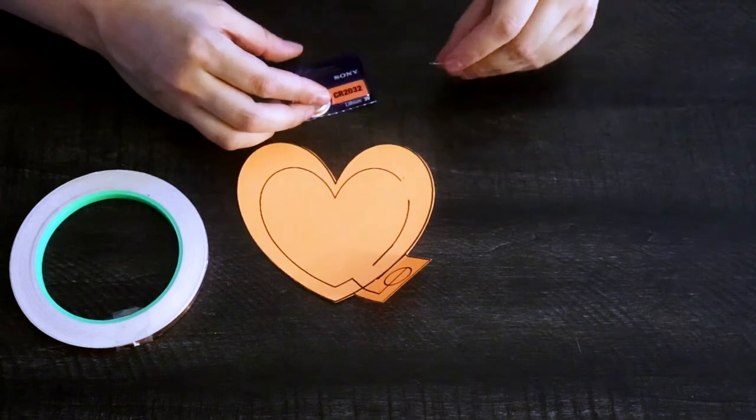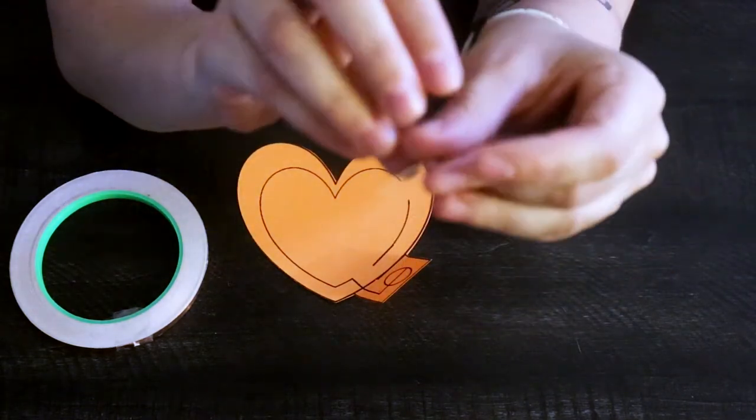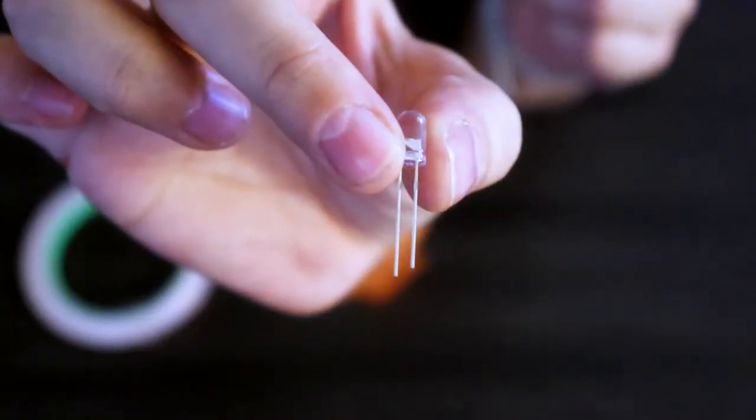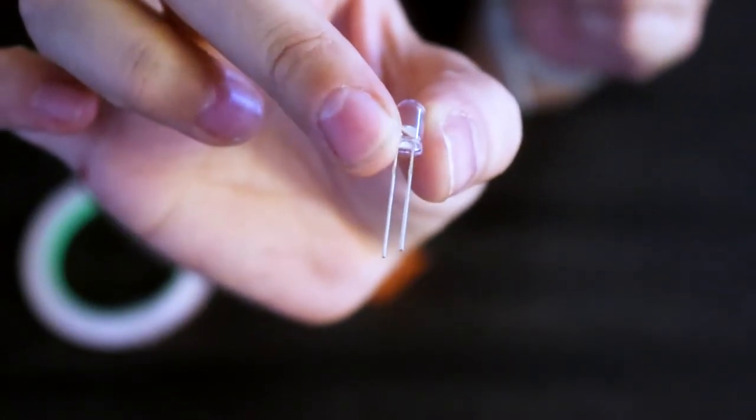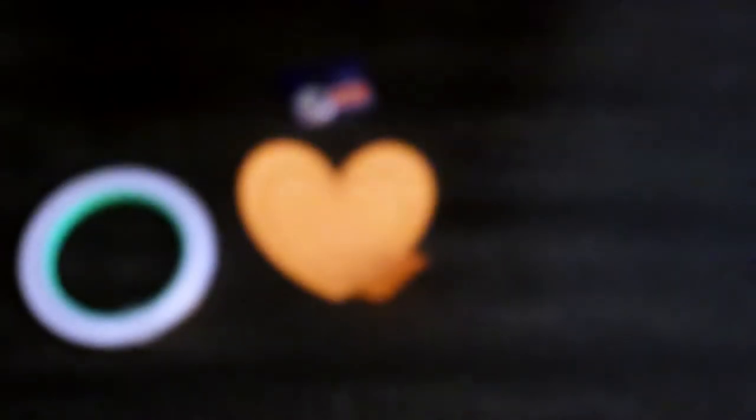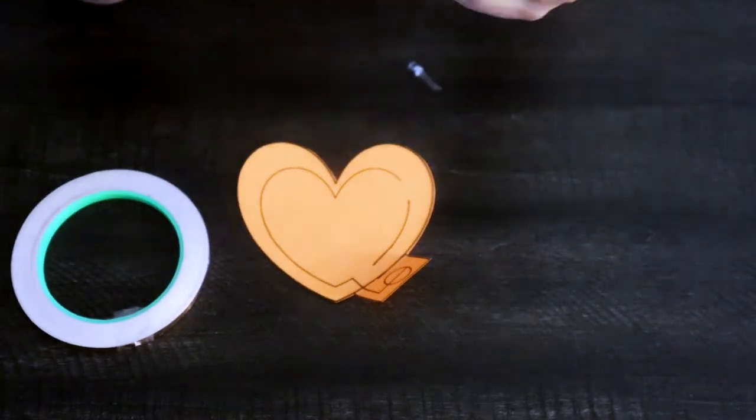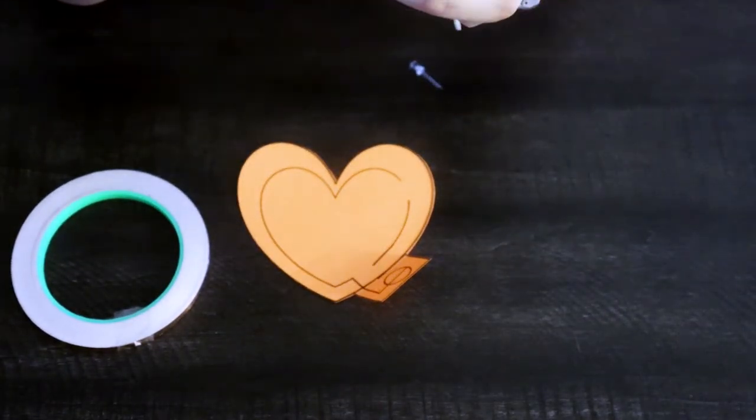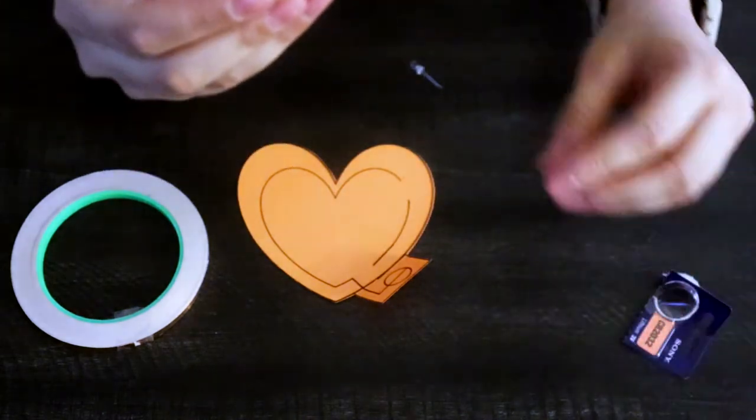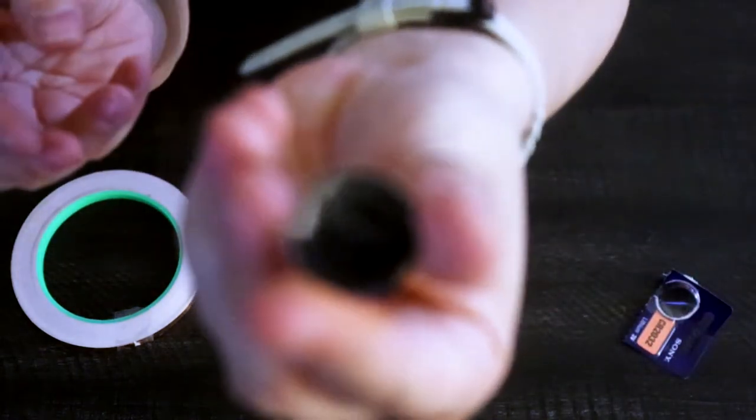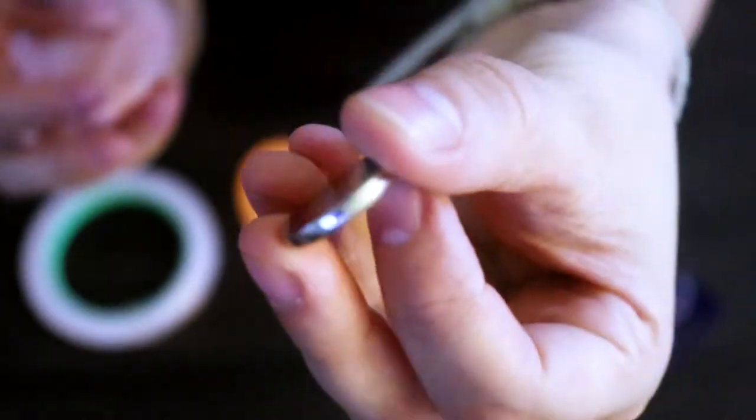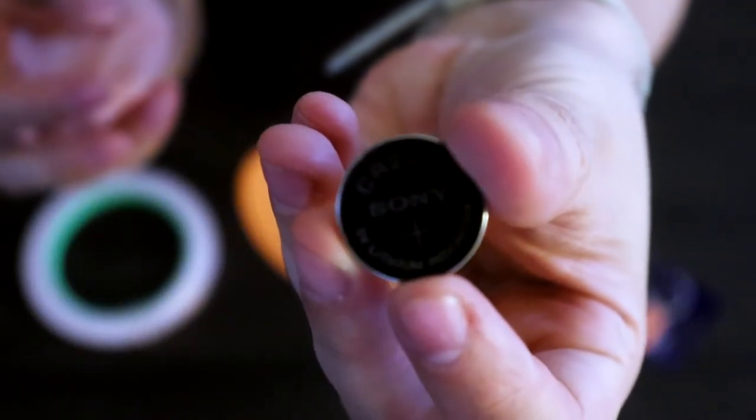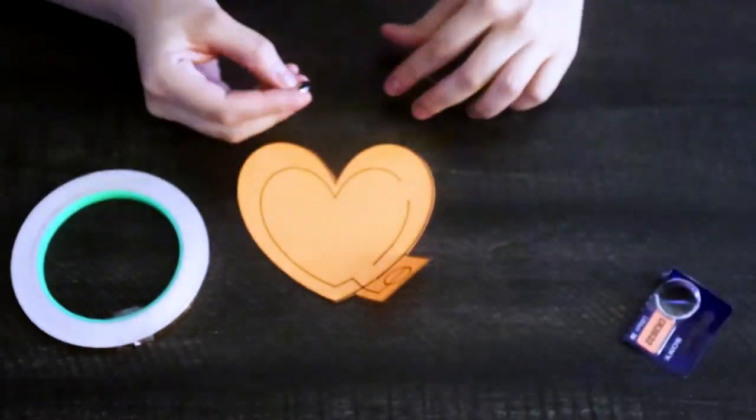So let's first take a look at this LED light. You'll notice that one of its legs is longer than the other one, that's because the longer leg is the positive and the shorter leg is the negative. You'll notice on this battery too, it's got a positive and a negative. It does have a little plus sign on this side that indicates that this is the positive side.